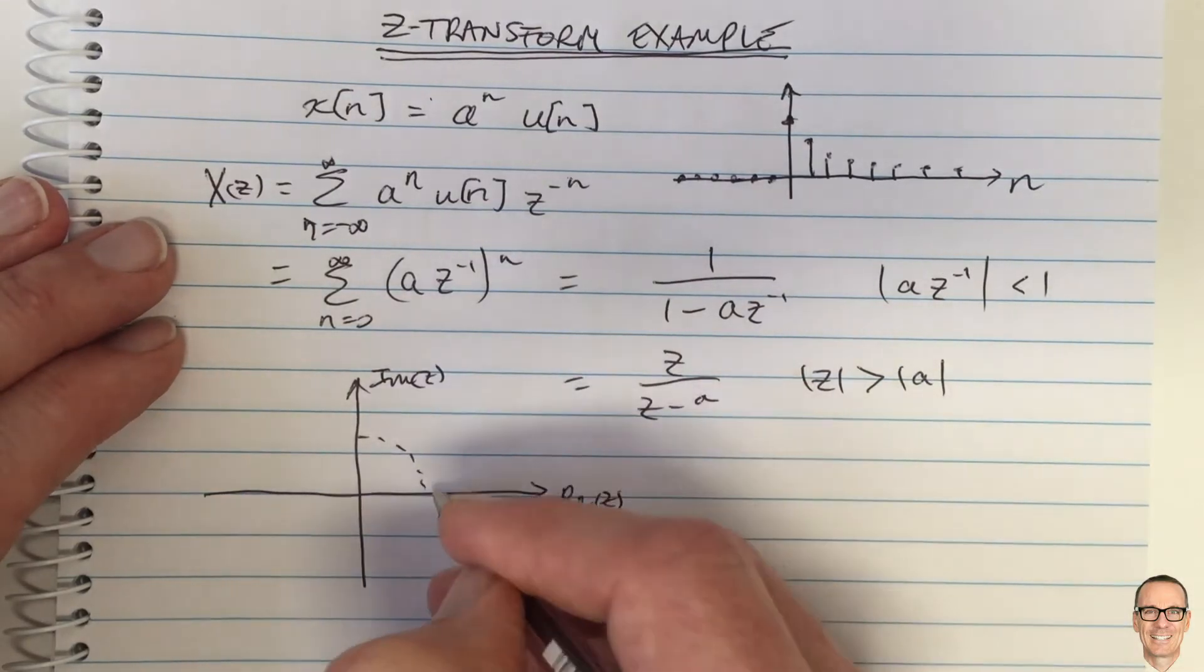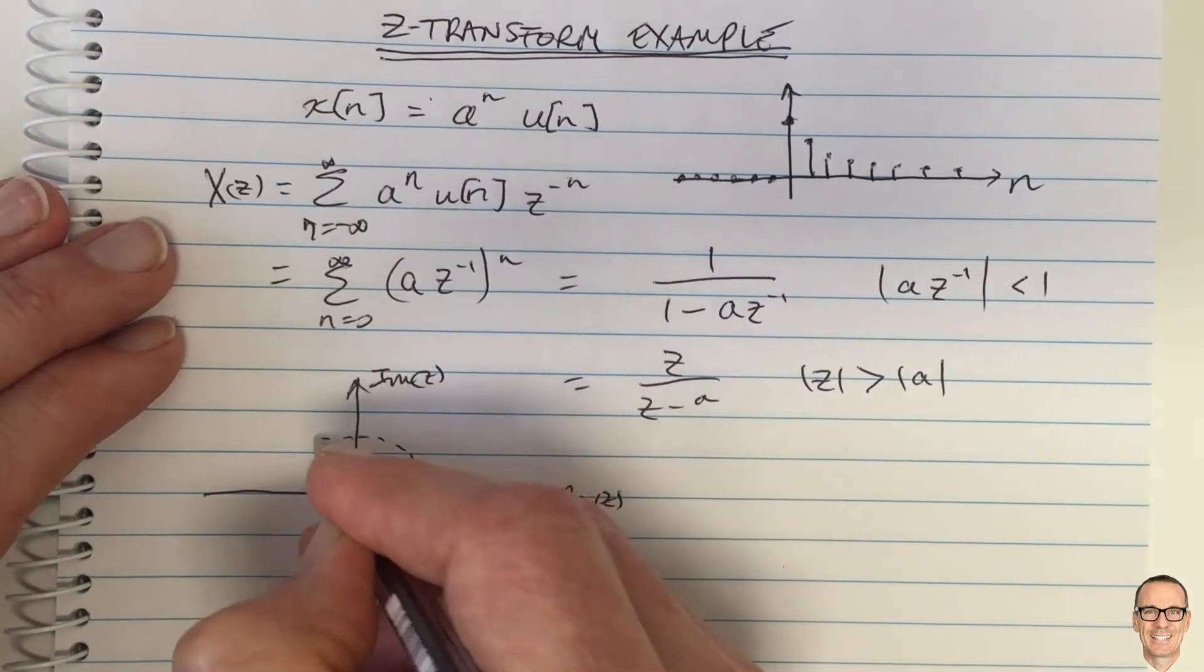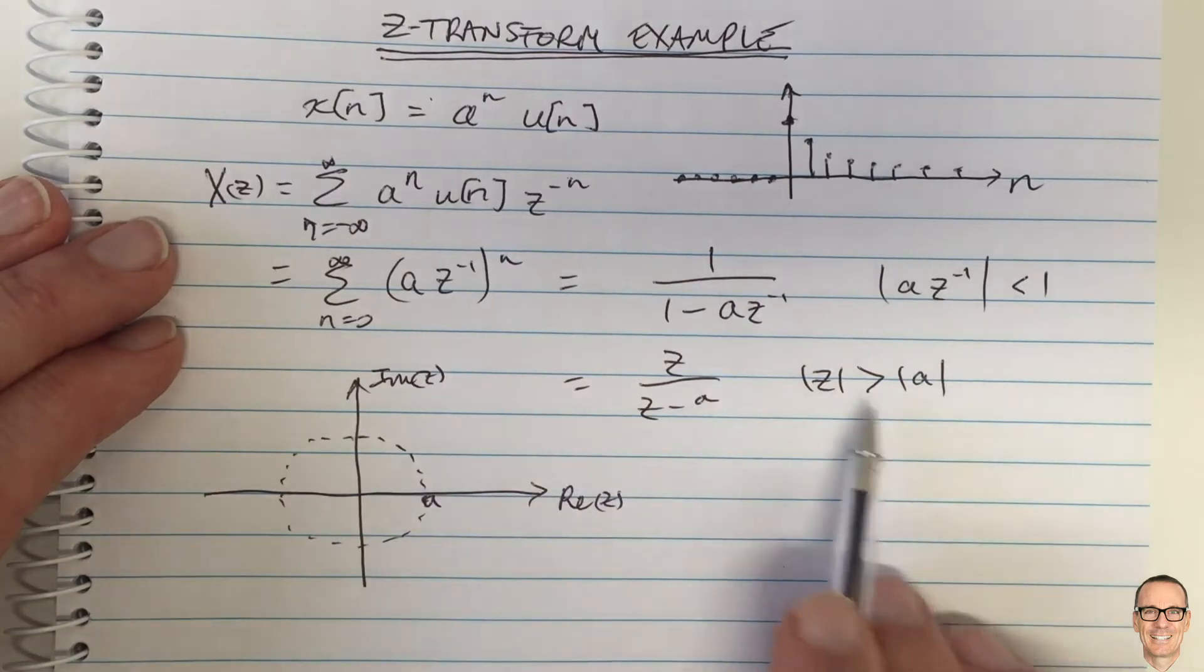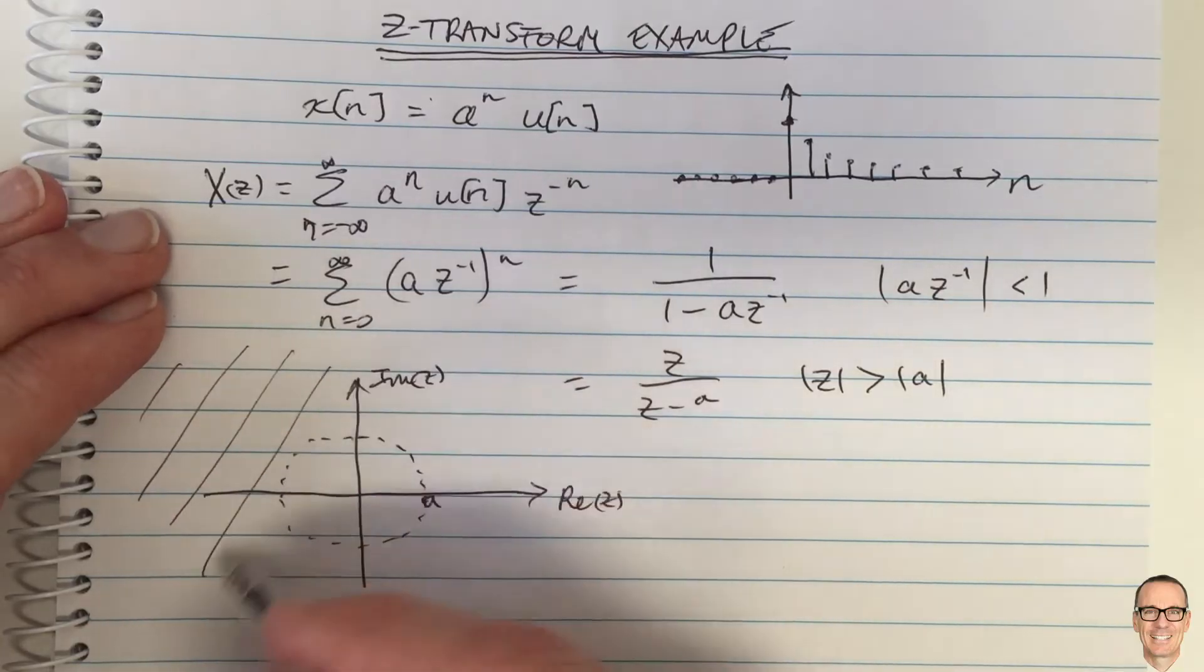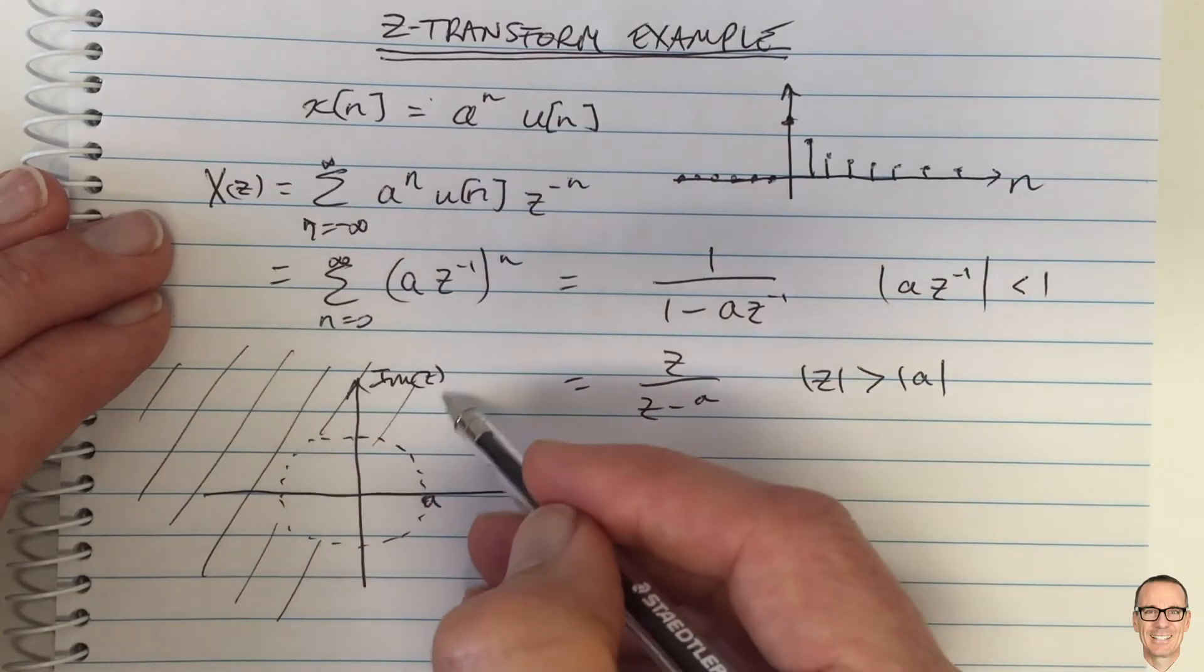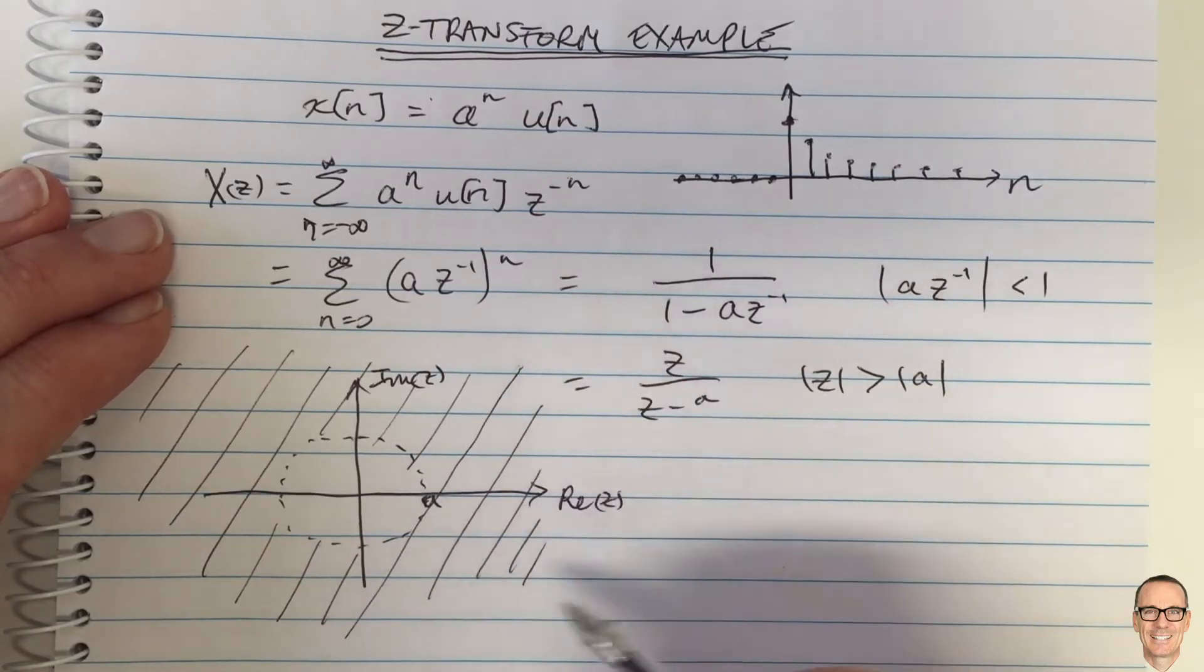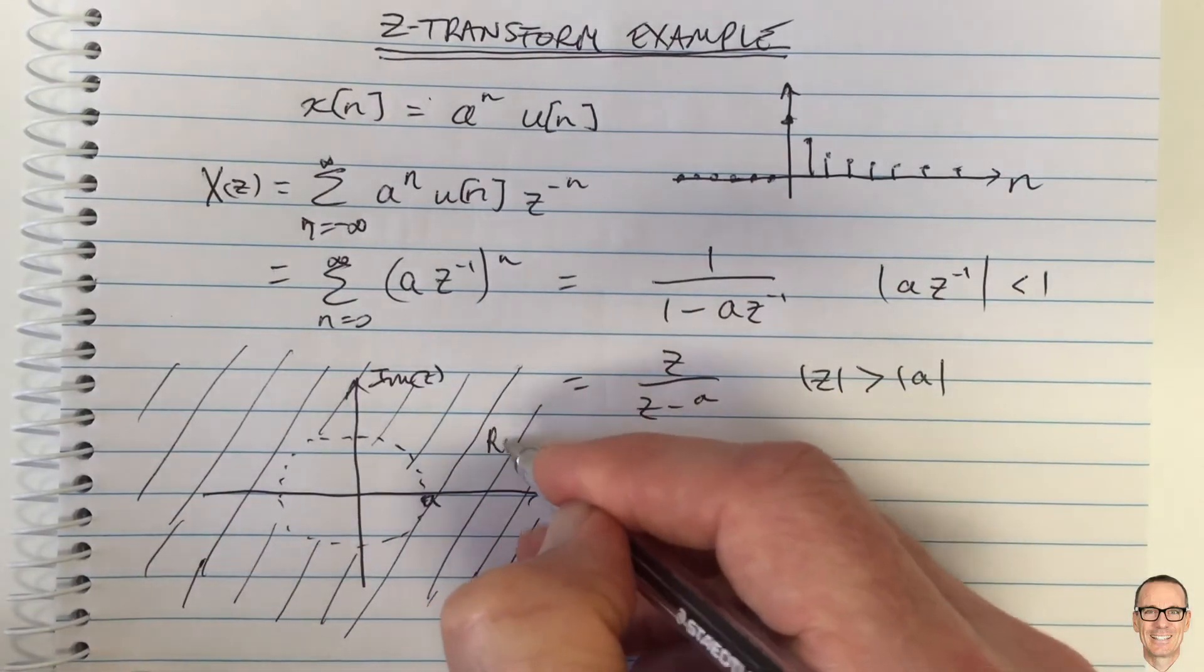So there's a circle here of radius a, where if we are outside that circle, because mod of Z has to be bigger than mod of a, then we know that this infinite summation converges, and therefore our Z-transform holds. So our Z-transform holds in this whole region of convergence.